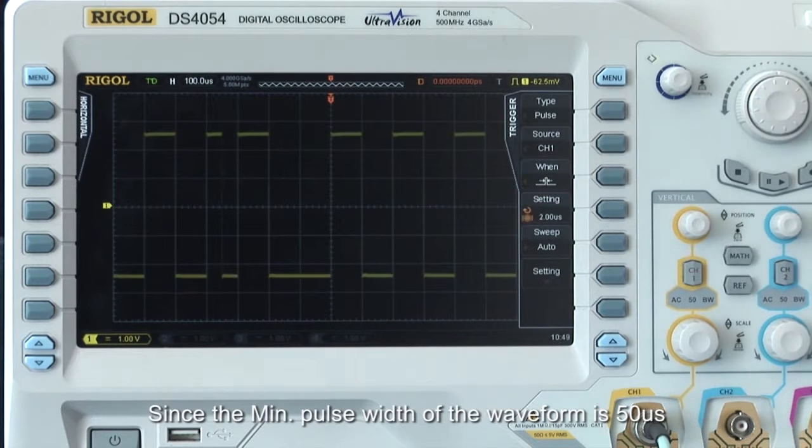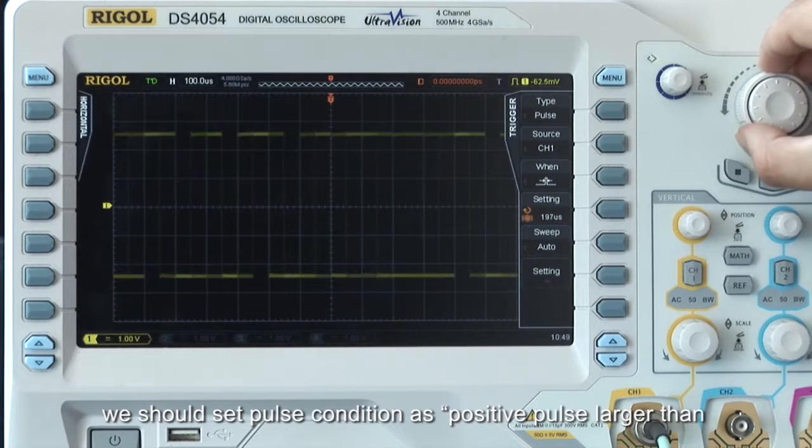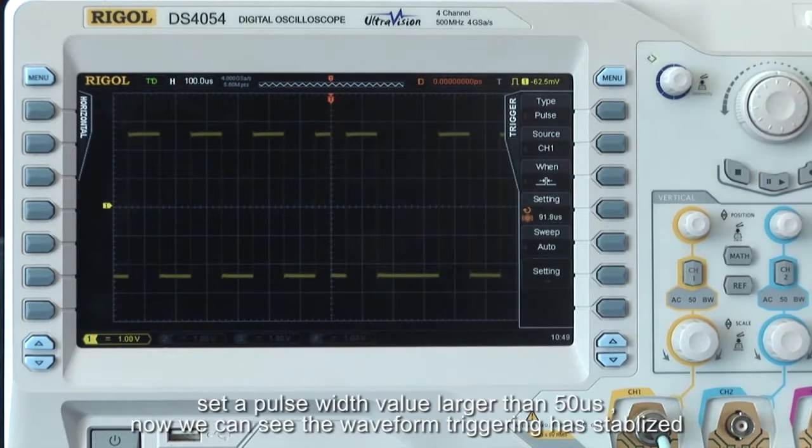Since the minimum pulse width of the waveform is 50 microseconds in this example, we should set the pulse condition as positive pulse larger than, and set a pulse width value larger than 50 microseconds. Now we can see the waveform triggering has stabilized.